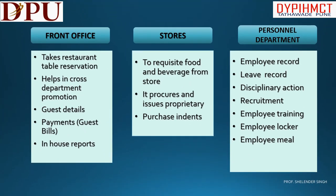The next three departments are Front Office, Stores, and Personnel. Front Office coordination includes taking restaurant table reservations, helping in cross-department promotion, sharing guest details, handling payments and guest bills, and providing in-house reports. The Stores or Purchase department handles requisition of food and beverages from store, procurement and issuing of proprietary items, and purchase indents. The Personnel department manages employee records, leave records, disciplinary actions, recruitment, employee training, employee lockers, and employee meals.